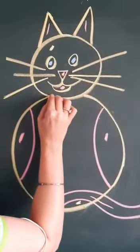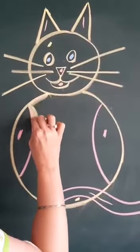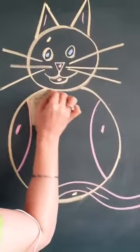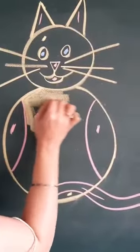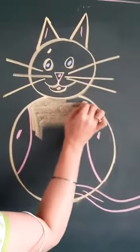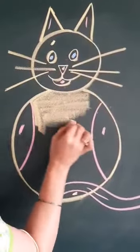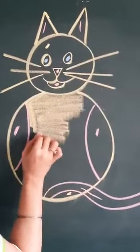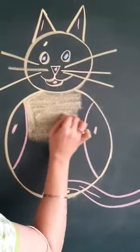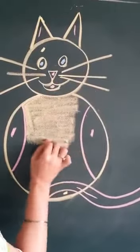Colors fill karne ke liye, aapko pahle line to line saath saath dheere dheere isko fill karna hai. Thik hai? Then, in small strokes, aap colors fill karo ge. Don't leave any white space. Thik hai? Aisai hi aapne dheere dheere small portions mein color fill karna hai. Thik hai, beta.